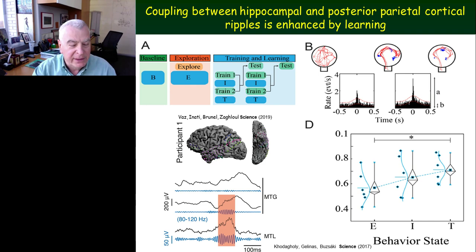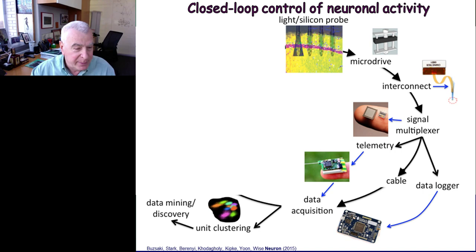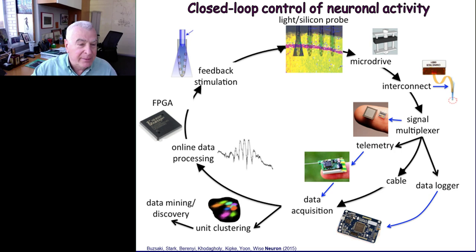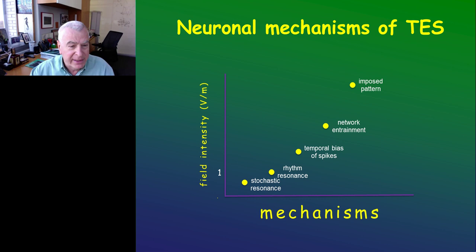So much about the afferent arm. These neurogrids are expandable, they are scalable, and large areas of the cortex can be covered with them. Once we have identified the patterns in the human cortex in the future, we have to take the pattern and use it as an efferent arm and see how we can affect and modify neocortical activity, subcortical activity, or any part of the brain. The choice that we have for the actuator arm, in our case, is transcranial electrical stimulation. There are a lot of hypothesized different mechanisms — some include stochastic resonance, rhythm resonance, temporal bias of spikes, network entrainment, or impulse patterns.